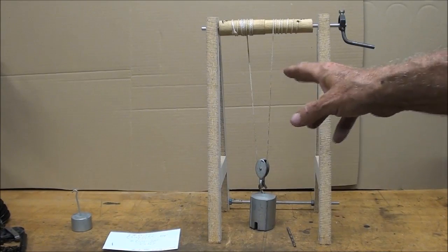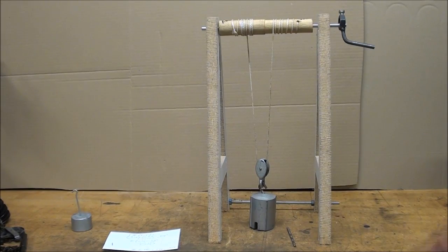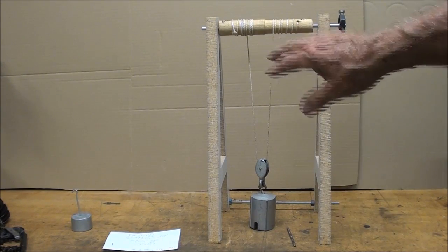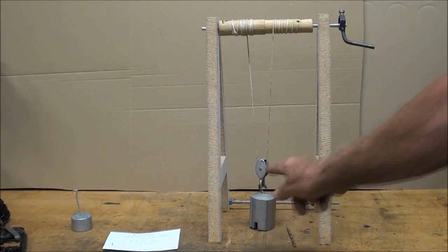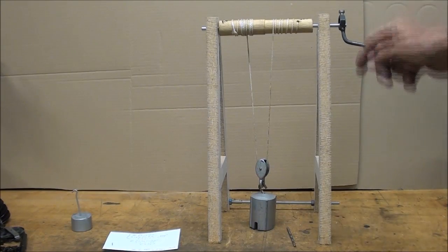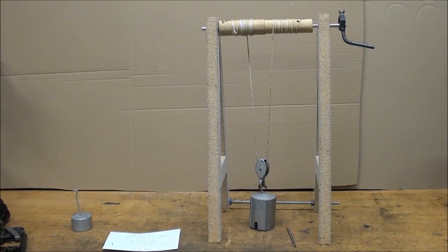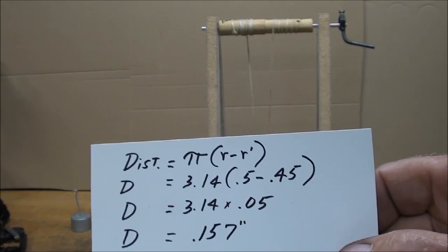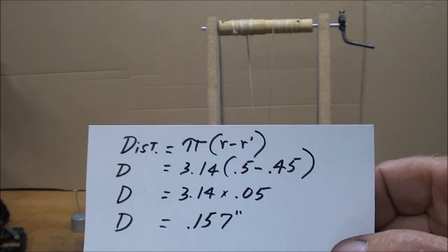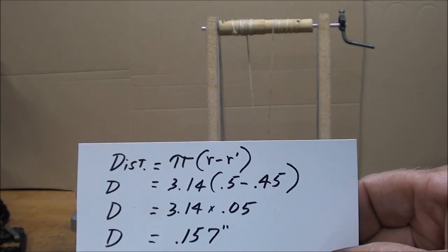If you want a little math or formulas, and probably most of you don't, there's all kinds of formulas that can be applied to this. Typically, the distance that the weight will move with one revolution of the crank is this formula here: distance equals π times (large radius minus small radius).